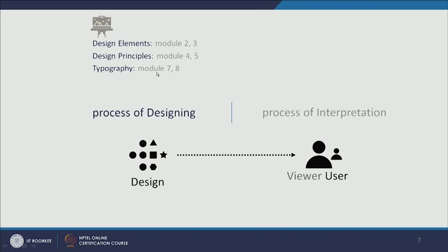Then there are the principles of design — how we arrange these elements using different theories. The principles of design are not just about the process of design; they are also derived from the process of interpretation and how users perceive it. Based on that, we arrange all the elements into a composition — it can be a 2D composition or have a time frame to become an animation or game design. These principles will be covered in modules four and five.